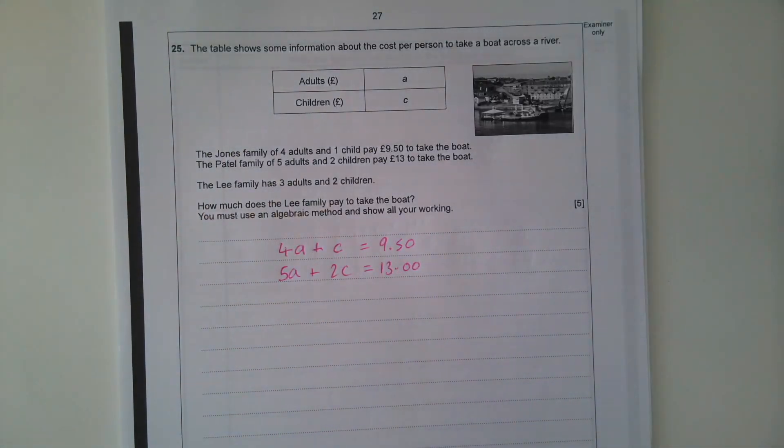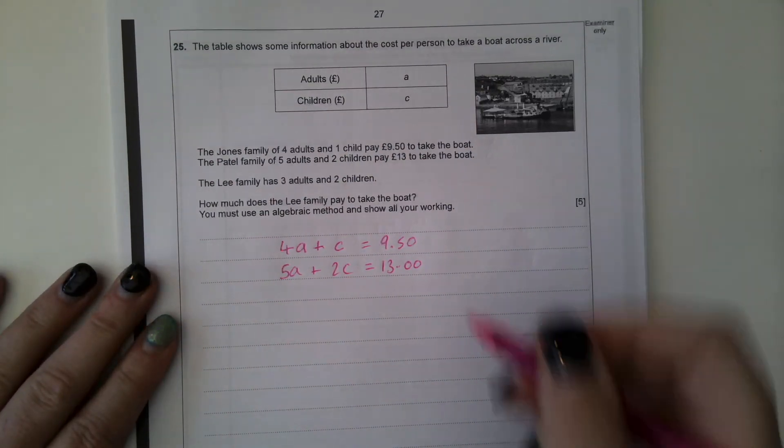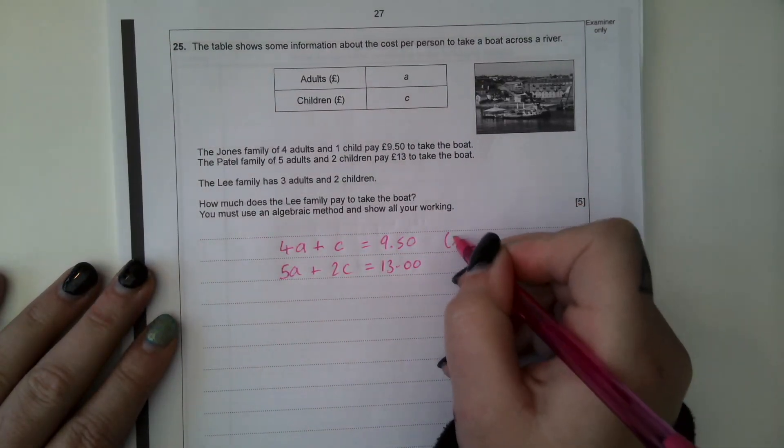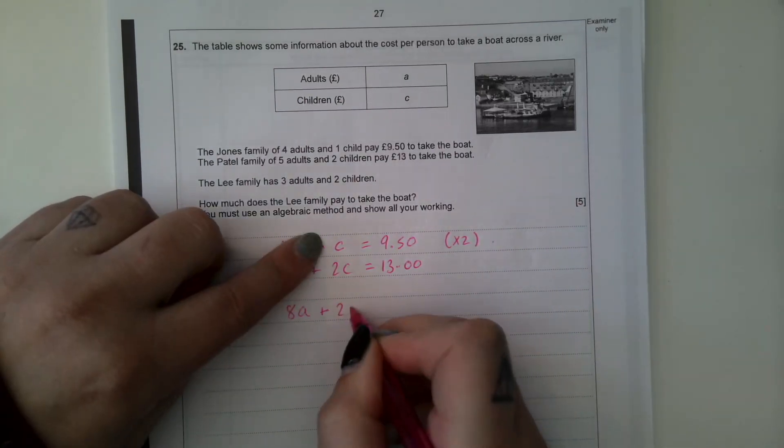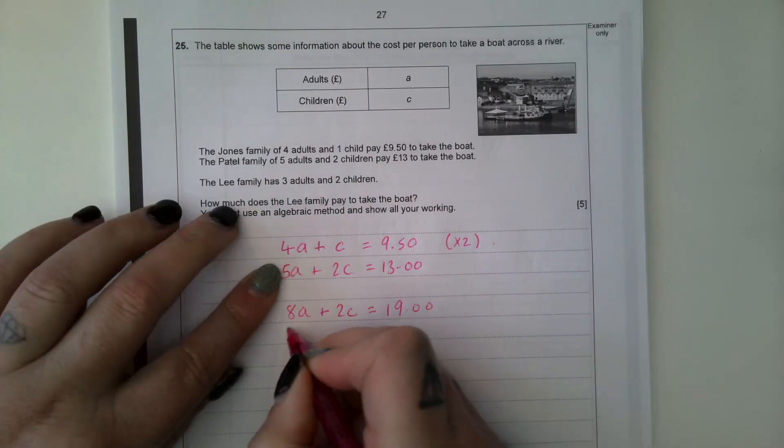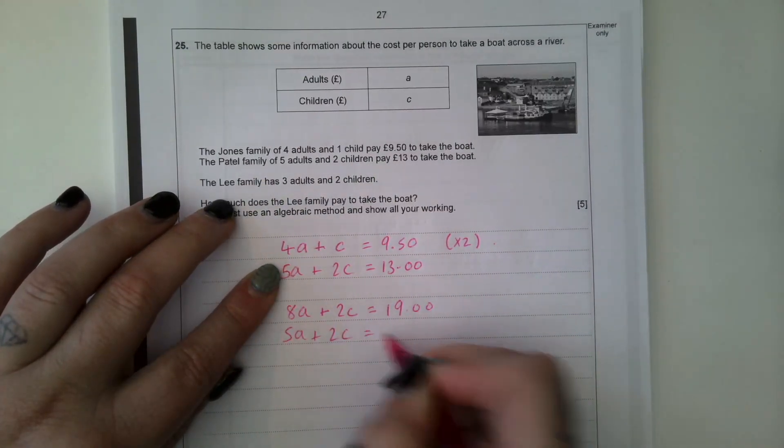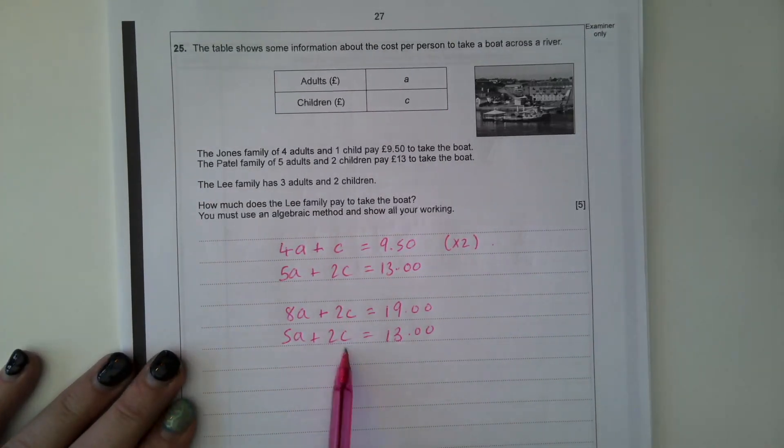So for the Jones family, we've got 4 adults plus 1 child and that's £9.50. The Patel family have got 5 adults and 2 children for £13. So I'm going to solve these equations now to find the cost of an adult and a child. So I'm going to multiply this one by 2. So it becomes 8A plus 2C equals £19. And then I'm going to rewrite the Patel's equation underneath.